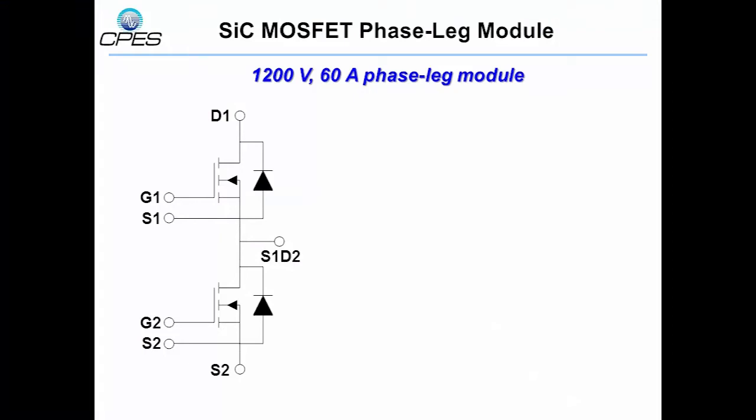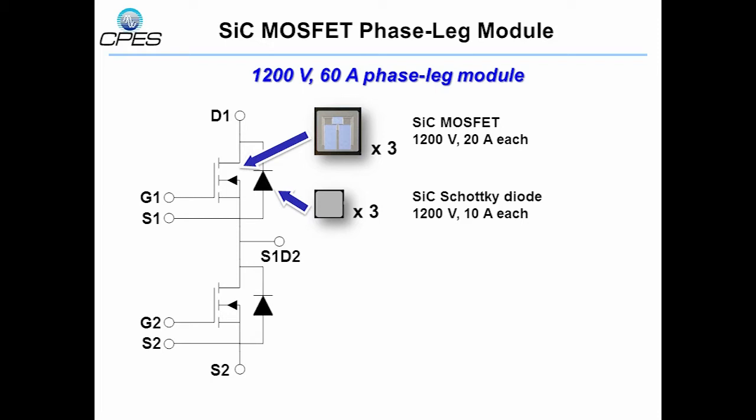The phase-leg module has the rating of 1200V and 60A. To get to this current, in each switch position, we parallel 3 20A Silicon Carbide MOSFETs and 3 10A Silicon Carbide Schottky diodes.